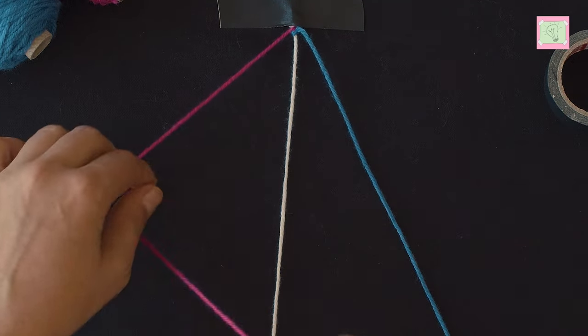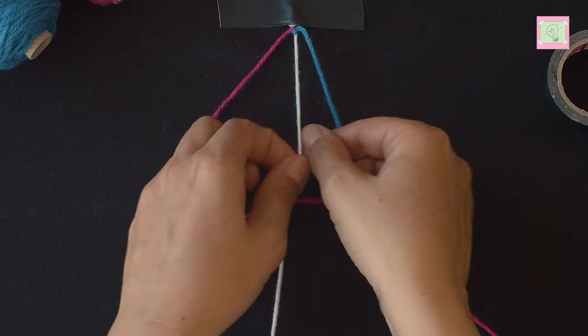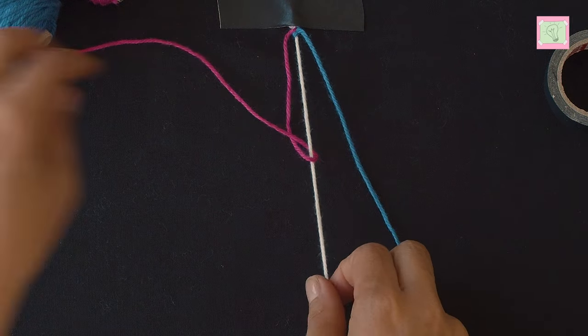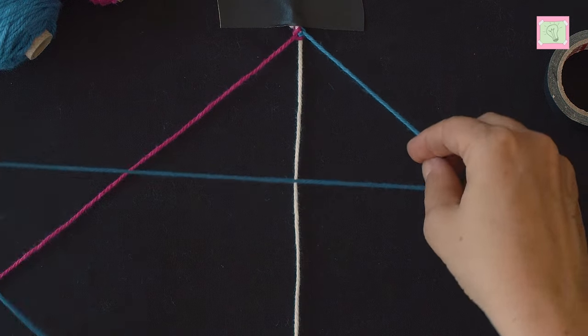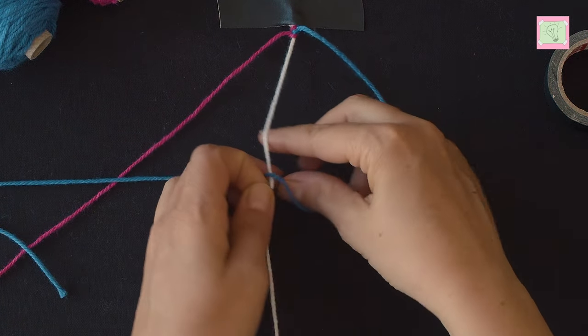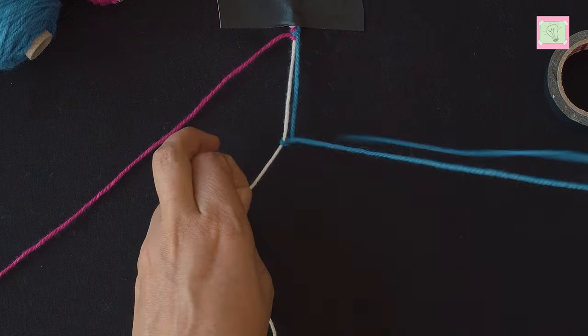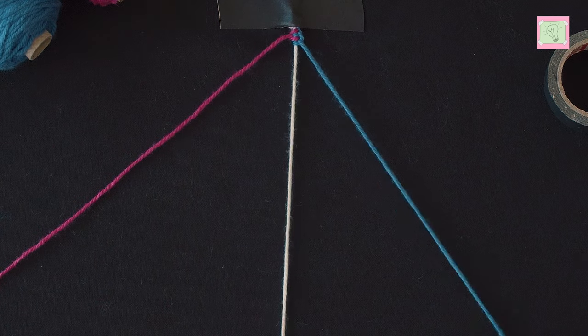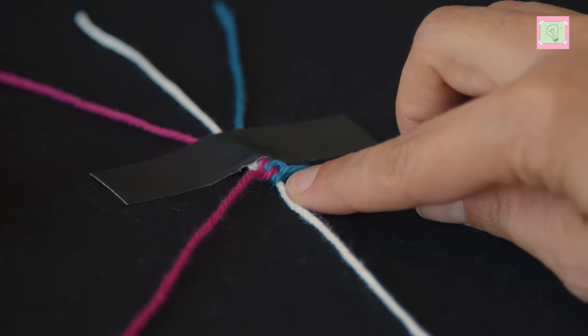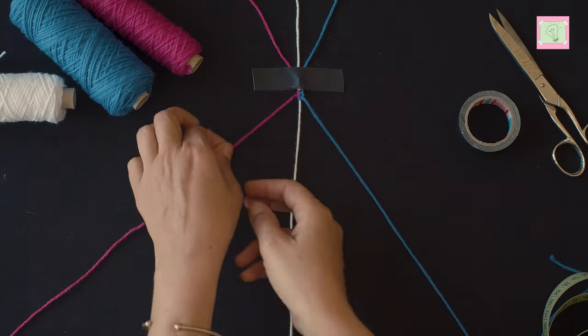Now you do this alternately. If you're not sure which color is your turn to tie, you can simply look at which color the last knot is tied. The other is then the turn.